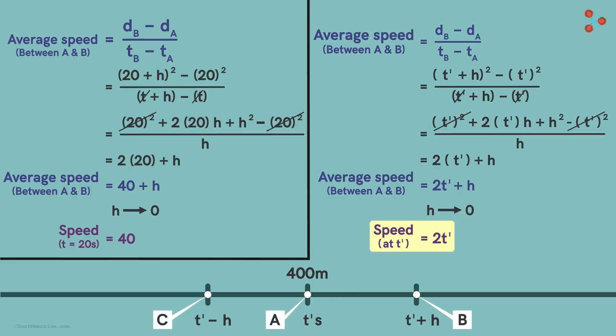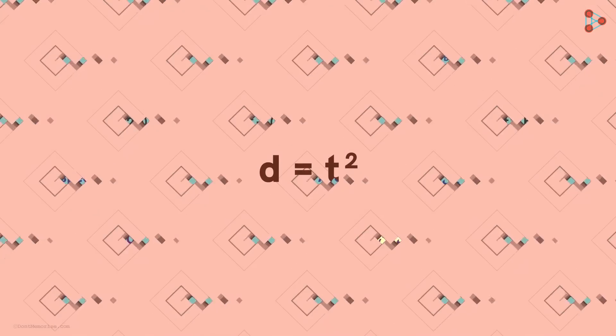At time t equal to 20 seconds, we get the instantaneous speed as 2 times 20 which is 40. In just one attempt, we would know the speed of the car at any instant. But this is all possible if we know this relationship.